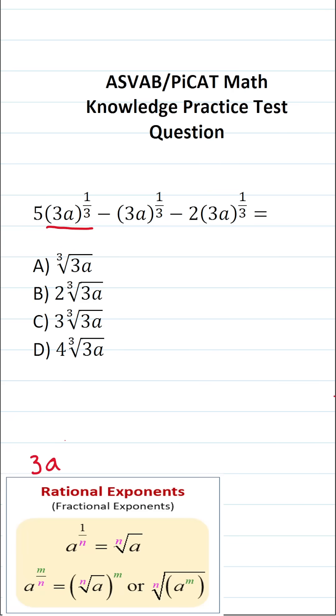We have 3a to the one-third power. If you look down here, this is how we rewrite it in radical form. 3a is going to go inside the radical, and this 3 is called our index. So 3a to the one-third is the same thing as the cube root of 3a.